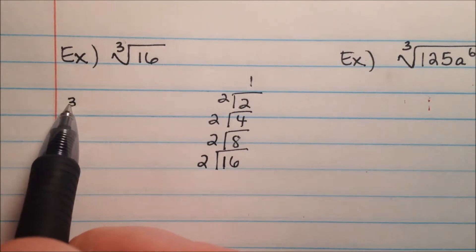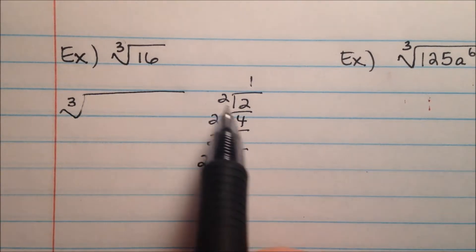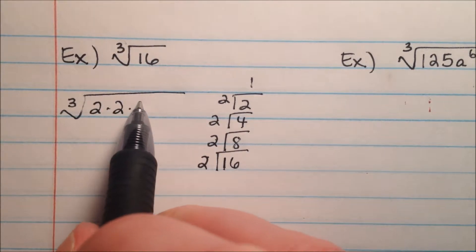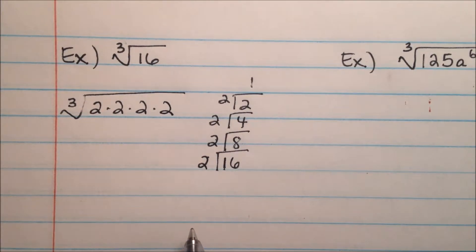So what this is going to look like now is I have the cubed root of 1, 2, 3, 4 2's.